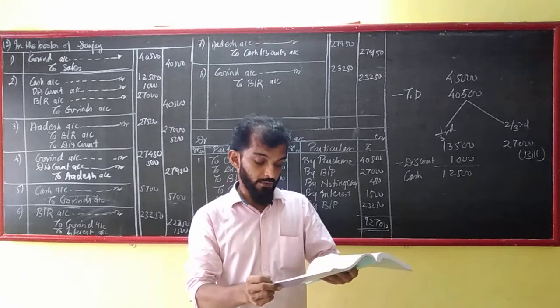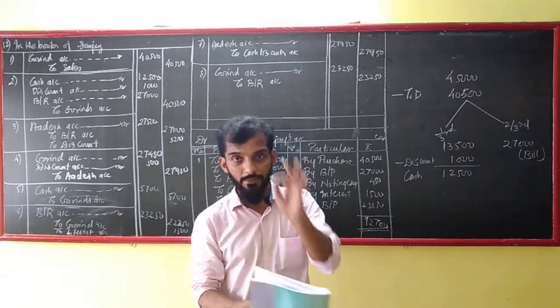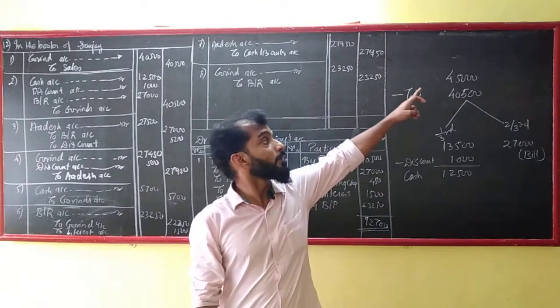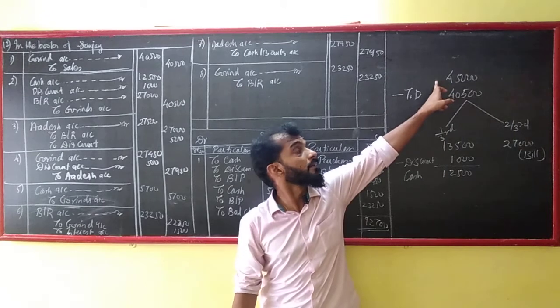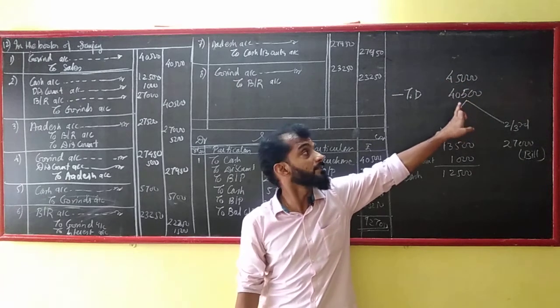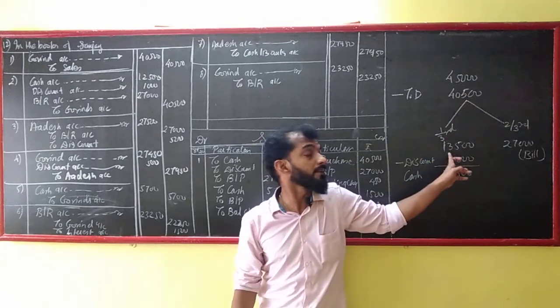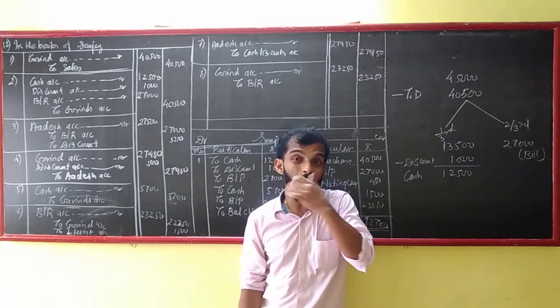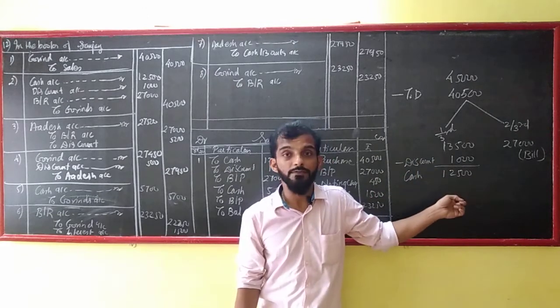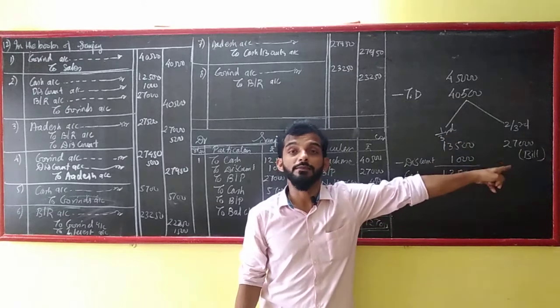Govind paid one third of the amount immediately at a cash discount of 5% and for the balance he accepted a bill for 3 months. Let me explain the entry. How much you have sold? 45,000 minus 10% trade discount, so 40,500. Govind paid one third of 40,500 which is 13,500. Cash discount 5% on 13,500 is about 12,500 cash received and 1,000 discount. So balance is 27,000.